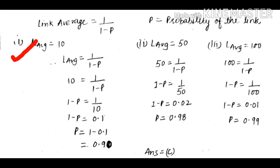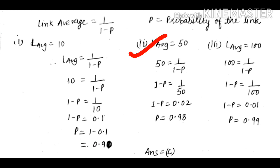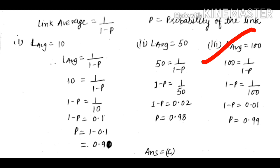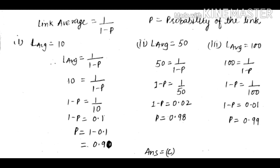For part a, link average value is 10: putting 10 into the formula gives 10 = 1/(1-p), so 1-p = 1/10 = 0.1, and p = 0.90. For part b, link average is 50: so 50 = 1/(1-p), giving 1-p = 1/50 = 0.02, so p = 0.98. For part c, link average value is 100: putting it into the formula gives probability p = 0.99.